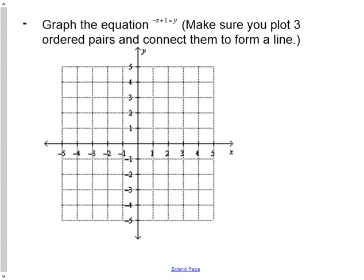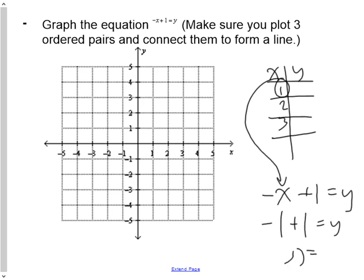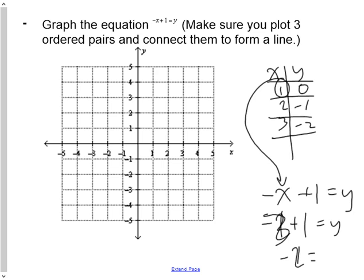Moving on to graphing. Given the equation −x + 1 = y, make a table of values using x = 1, 2, 3. When x = 1: −1 + 1 = 0. When x = 2: −2 + 1 = −1. When x = 3: −3 + 1 = −2. Plot the points (1, 0), (2, −1), and (3, −2), connect them with a ruler, and you have the line.